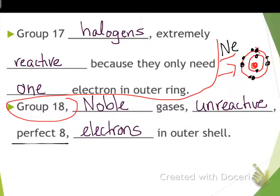This has eight. It's got a perfect number. It does not want to react with anybody because it's got everything it needs. Now if you were talking about something in the halogen group, group seventeen, like chlorine.